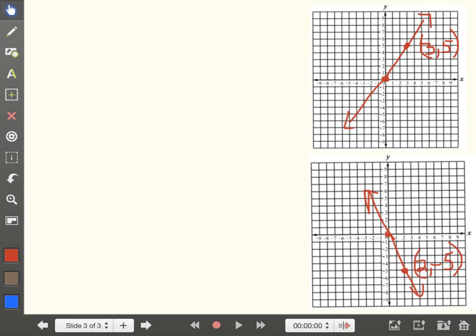Now what if they give you a graph of a direct variation equation? They want you to come up with the equation. We want it to be in y equals, we need the constant of variation. Remember the constant of variation is just the slope.